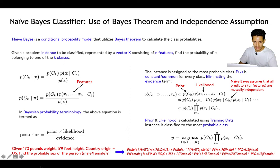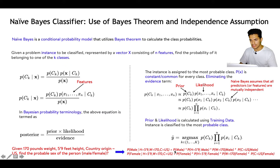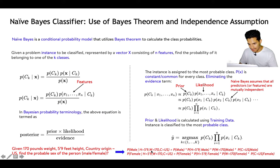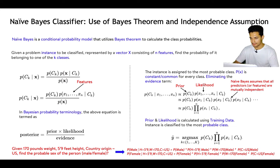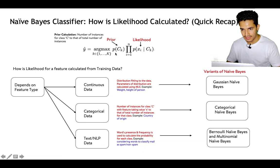Let's look at a concrete example. A person has 170 pounds weight, 5'9" height, and country of origin is US. We have to find whether the person is male or female. We first calculate the prior probability — how frequently male and female occur in the dataset. Then we calculate the likelihood: given a male, how likely is height 5'9", how likely is 170 pounds, how likely is country US — and similarly for female. We find which posterior is bigger and the person gets classified accordingly.